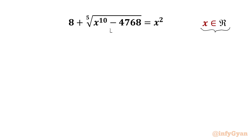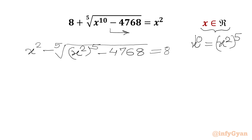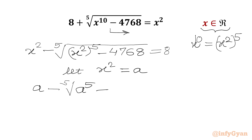I will take the fifth root term to the RHS first, and we can write x to the power 10 as x squared whole power 5. So I will write our equation: x squared minus the fifth root of x to the power 10, which is x squared whole power 5, then minus 4768, equal to 8. Now we can assume let x squared equal to a.